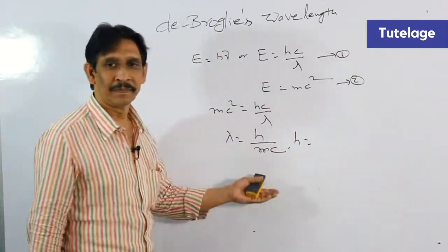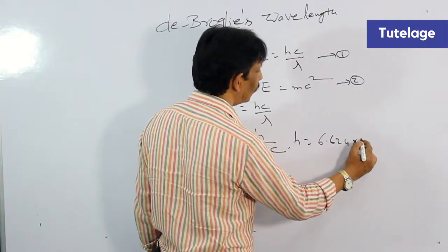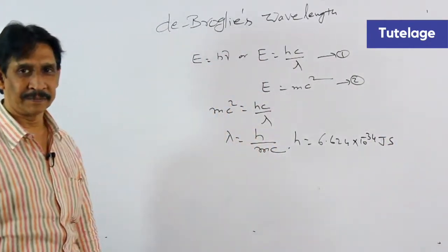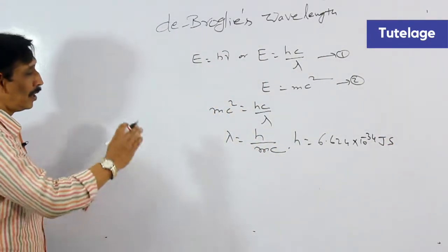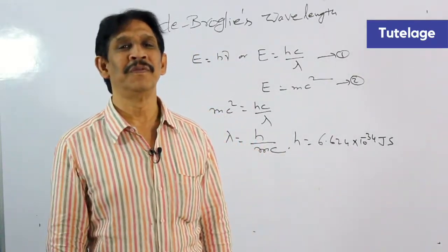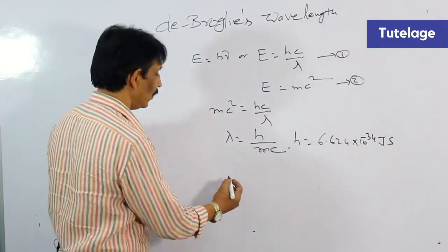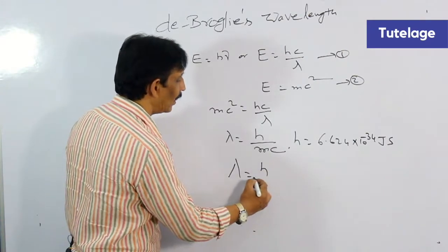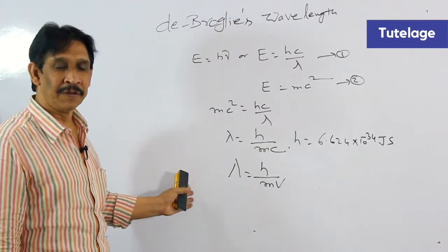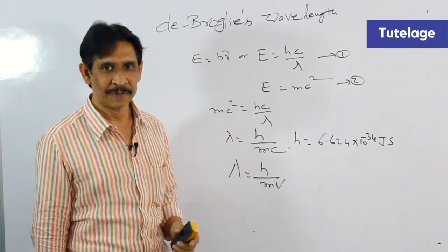Planck's constant h is 6.625 × 10⁻³⁴ joule-seconds. Now, instead of a photon, if a particle of mass m is moving with velocity v, then the De Broglie wavelength becomes lambda is equal to h by mv, where lambda is the De Broglie wavelength, h is Planck's constant, m is the mass of the particle, and v is the velocity.